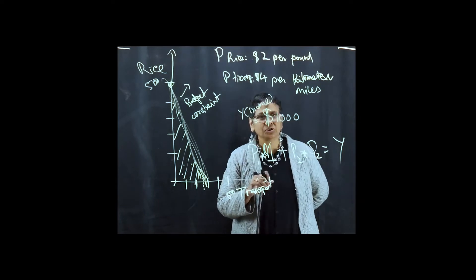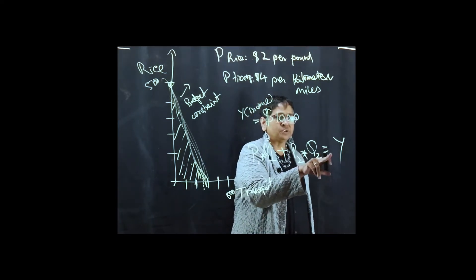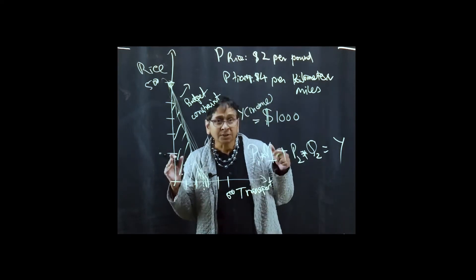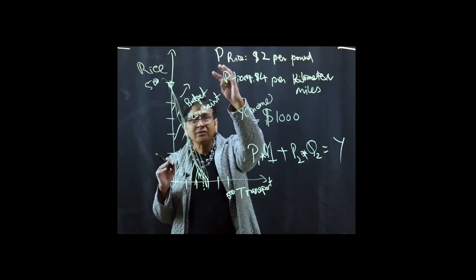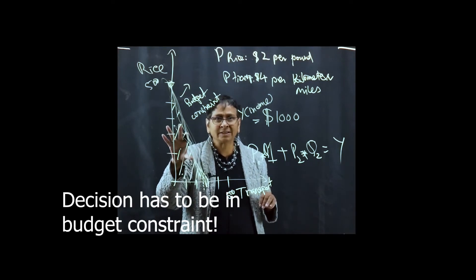This is your budget constraint, P1 times Q1 plus P2 times Q2 equal to Y. So the first thing we know is that whatever decision you make, it has to lie inside this budget constraint.